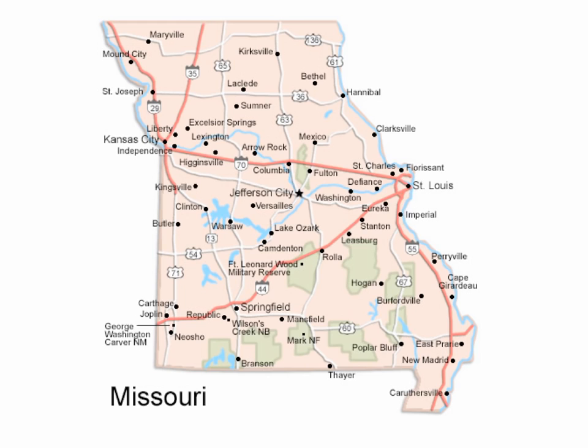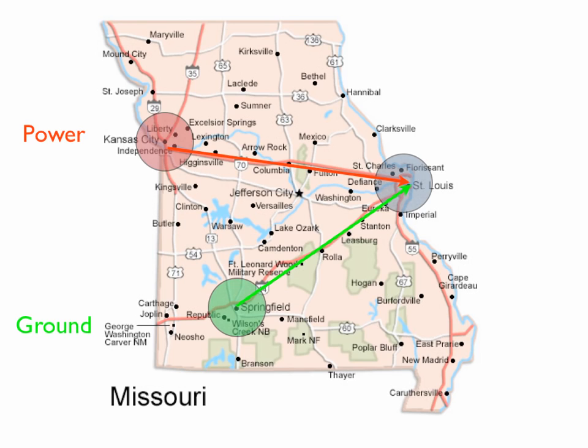Now this is a map of Missouri. I happen to live in Missouri in Springfield. I have a friend that lives in Kansas City. And if we both wanted to go on a trip and meet in St. Louis, I would take this road and he would take the other road and we would meet in St. Louis. Now if this were an electrical map, this would be the power side and this would be the ground side. And St. Louis would be the load.